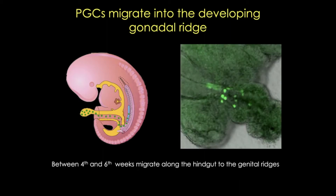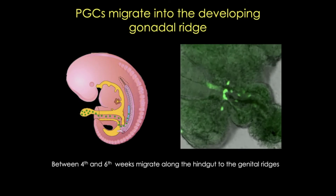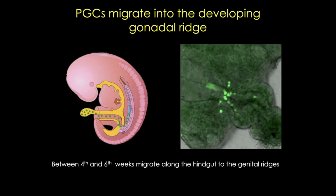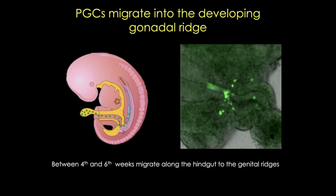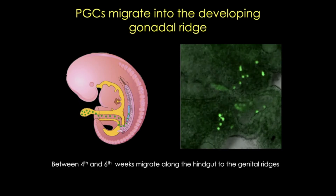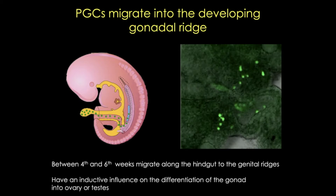Here's a movie — this is actually a mouse embryo — and it shows the primordial germ cells labeled with green fluorescent protein actually migrating. These cells will come to rest in the sixth week on either side of the midline in that gonadal ridge, where they'll continue to divide and to influence the formation of the gonads.